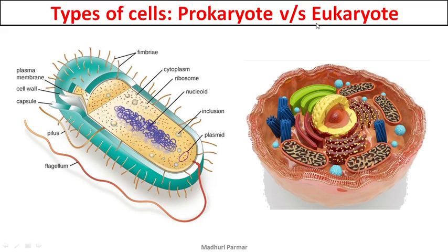Then you have eukaryote. Wherever you hear the word 'eu', it means modern or advanced. Eukaryote means advanced nucleus, because here the nucleus has a covering called nuclear membrane. The major difference is: there is no nuclear membrane or nuclear envelope surrounding the DNA in prokaryotes, while in eukaryotes there is a membrane surrounding the genetic material or DNA.